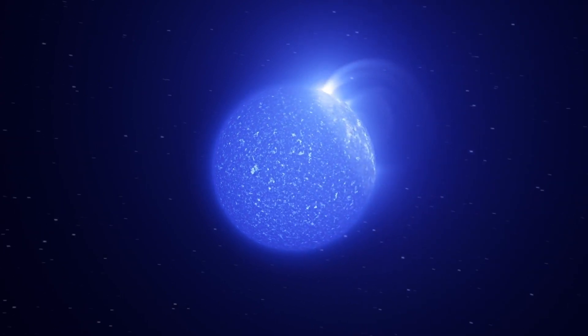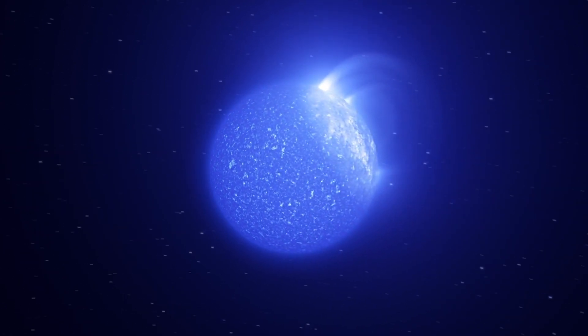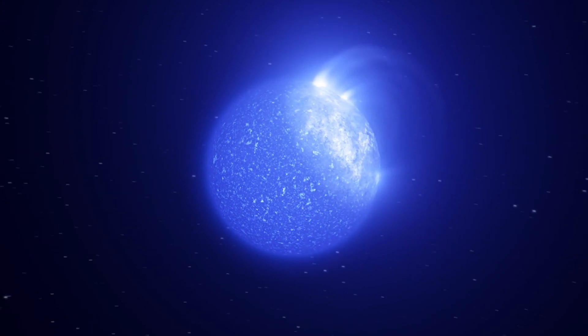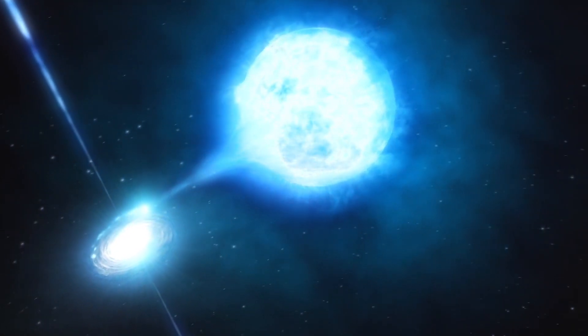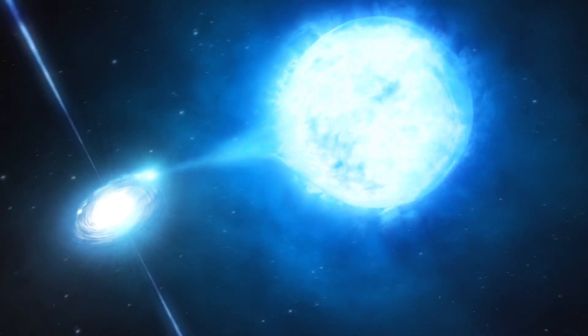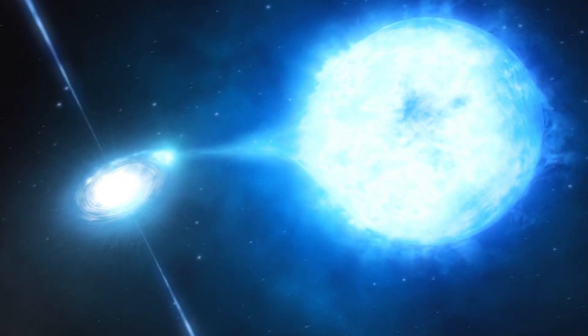So you can think of neutron stars as the result of a star that is not quite massive enough to become a black hole, but is still massive enough to undergo a catastrophic collapse that leads to the creation of an extremely dense, highly compressed object.